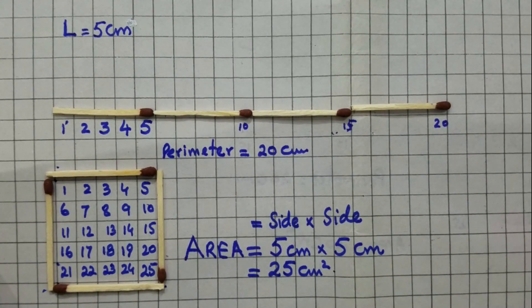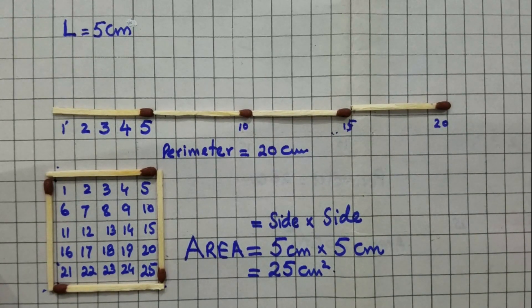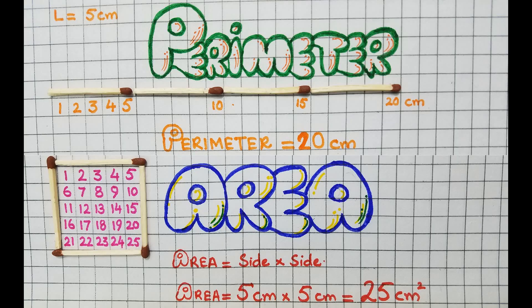Thank you very much. This is the practical way to calculate the area of a square and perimeter of a square. Thank you very much. Take care. Allah Hafiz. See you in Mads Fun Factory. See you next lecture. Thank you.